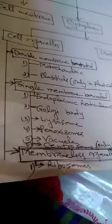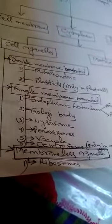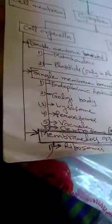The cell organelles which found in the cells are also categorized in three types. So, that some bounded by double membrane, some by single membrane and some have not membrane. In double membrane bound cell organelles is two, mitochondria and plastid.